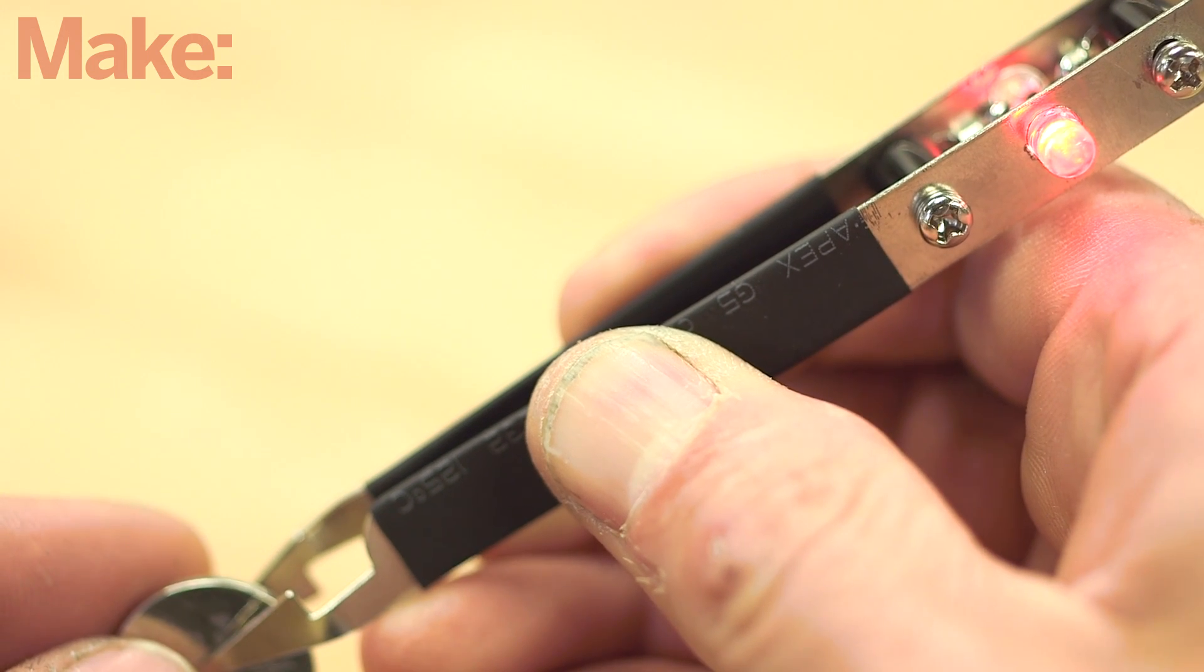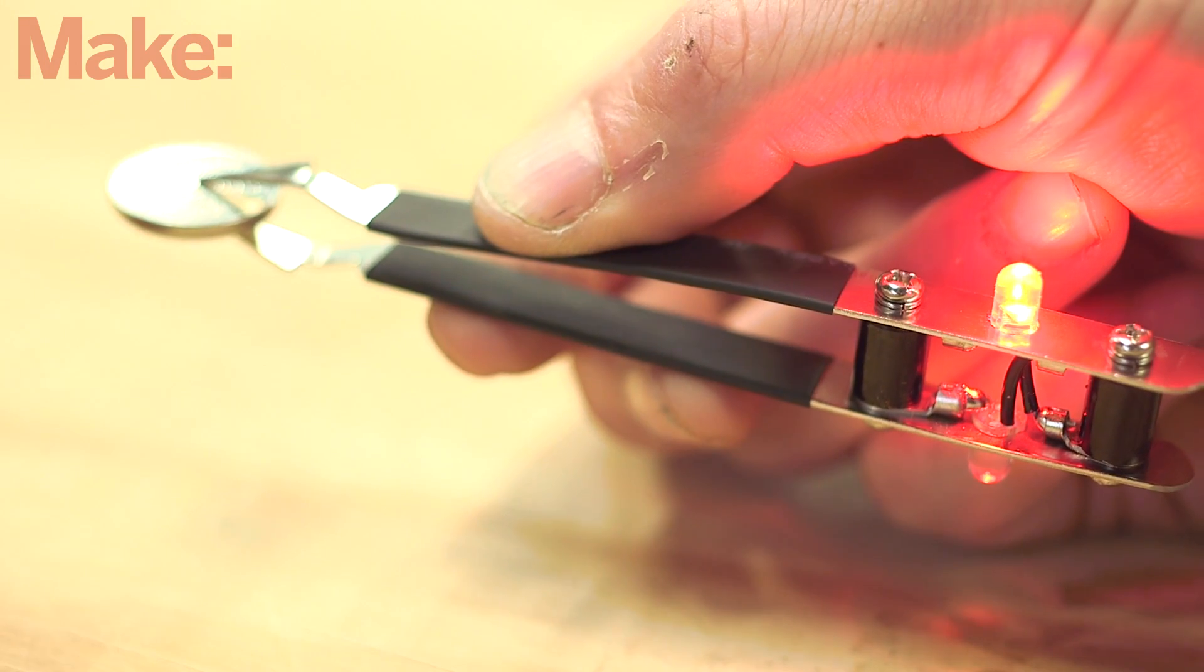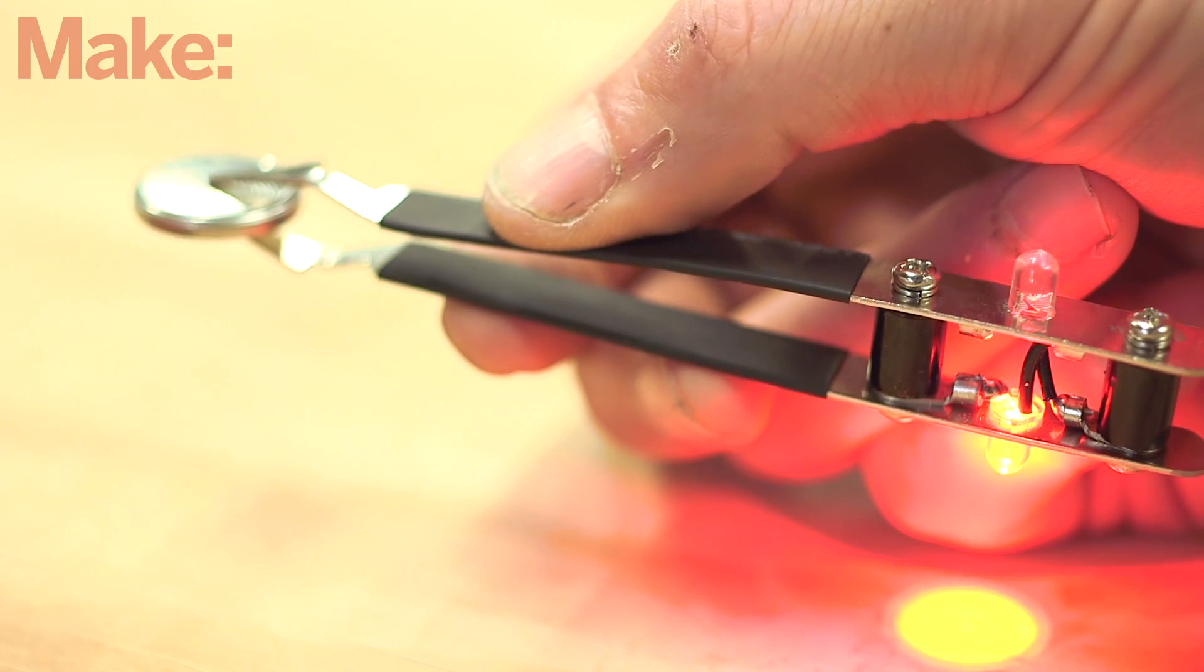If it shines softly, the cell is giving 1.5 volts. The LED that lights up indicates the positive side of the cell.